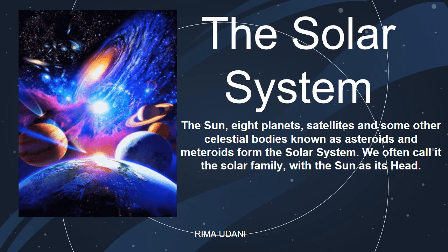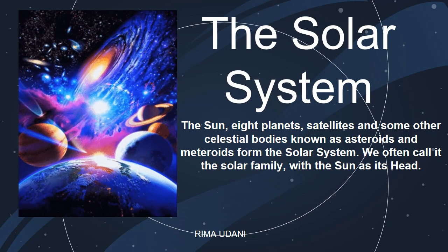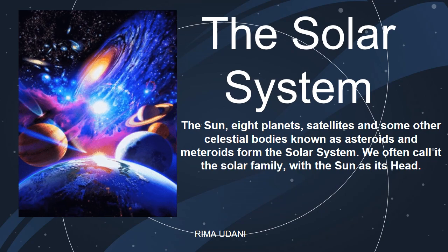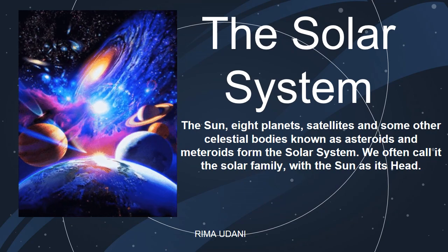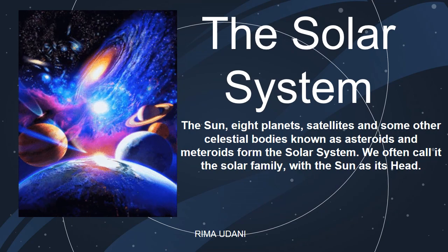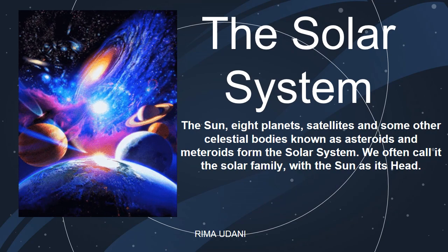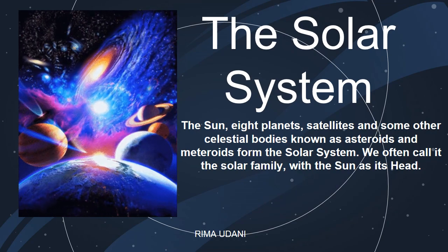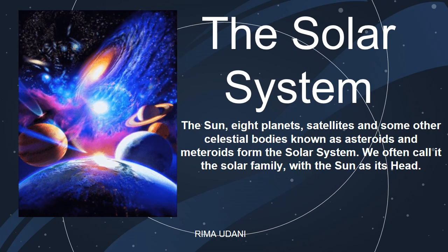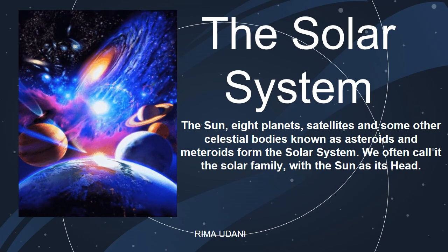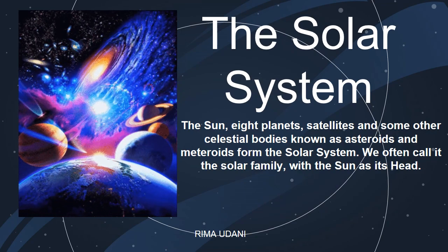In part two of this chapter, we are going to start off by learning about the solar system. The Sun, eight planets, satellites, and some other celestial bodies known as asteroids and meteoroids form the solar system. We often call this the solar family, with the Sun as its head. In Roman mythology, Sol is the sun god — solar means related to the sun. The family of the sun is therefore called the solar system.